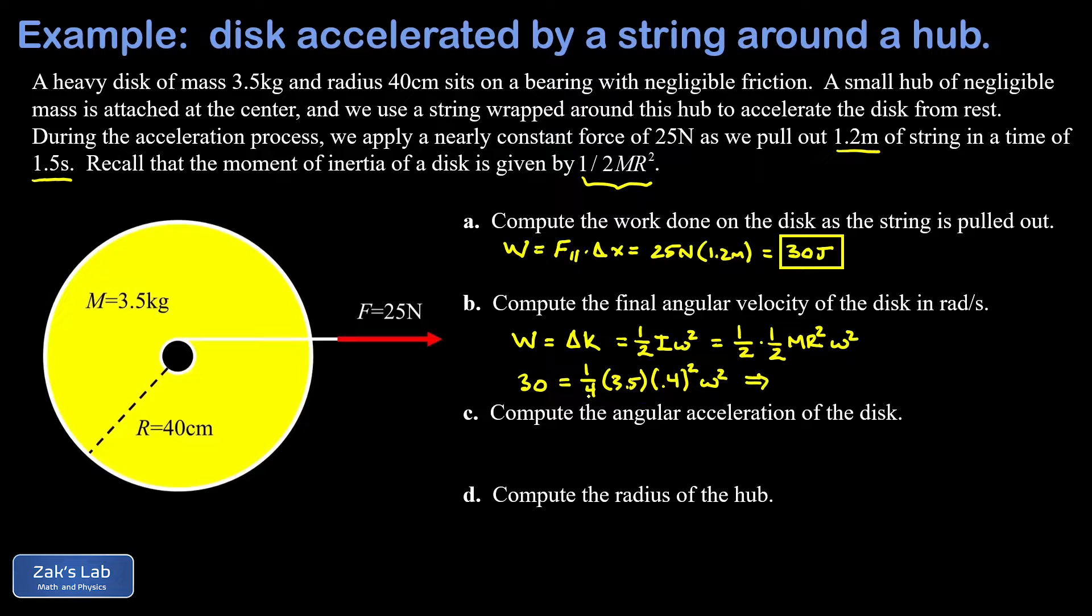So we divide 30 by the product of all these coefficients and then square root the result to solve for omega. And when I run the numbers on this, I get 14.6 radians per second.